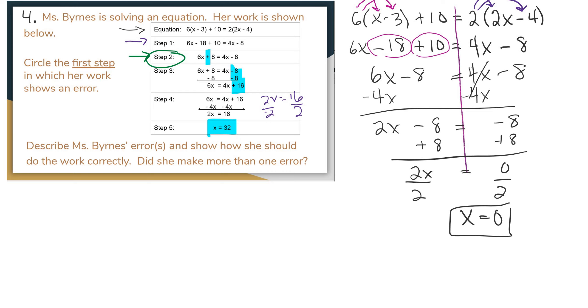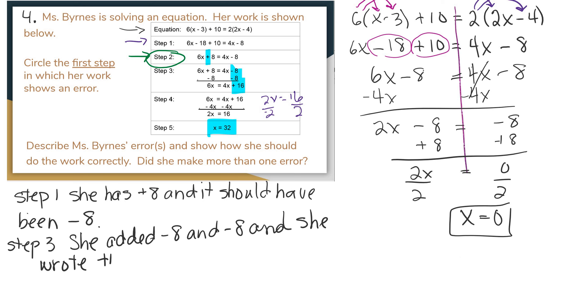Okay, so we need to describe the steps that she made the errors. Step 1, she has the wrong sign. She has a positive 8, and it should have been negative 8. In step 3, she added negative 8 and negative 8. And she wrote positive 16. It should have been negative 16.